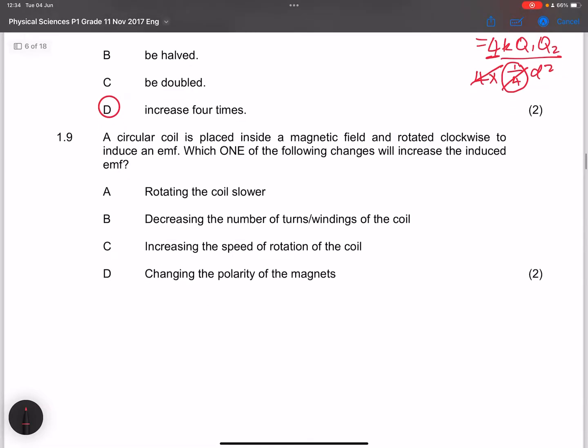The next question, they say a circular coil is placed inside a magnetic field and rotated clockwise to induce an EMF. Which one of the following changes will increase the induced EMF? Remember that when we look at the induced EMF, we say that that's minus N as the change in phi divided by the change in time. Remember, the only things that increase EMF would be increasing the number of coil turnings, increasing the magnetic field either using a stronger magnet, and in this case, it would be the rotation, the number of rotations. So if I look at those three things, those are what increases the EMF as for Faraday's law.